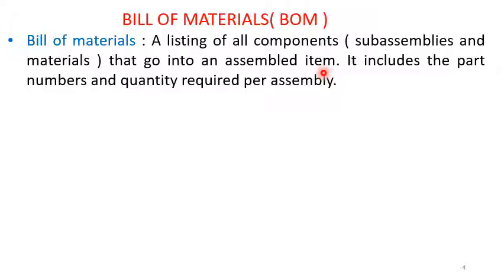The Bill of Materials will also include the part numbers — that is, the component numbers — as well as the quantity required per assembly. This is important: per assembly, for one assembled item, it is the list of all components that go into one unit of the assembled item.